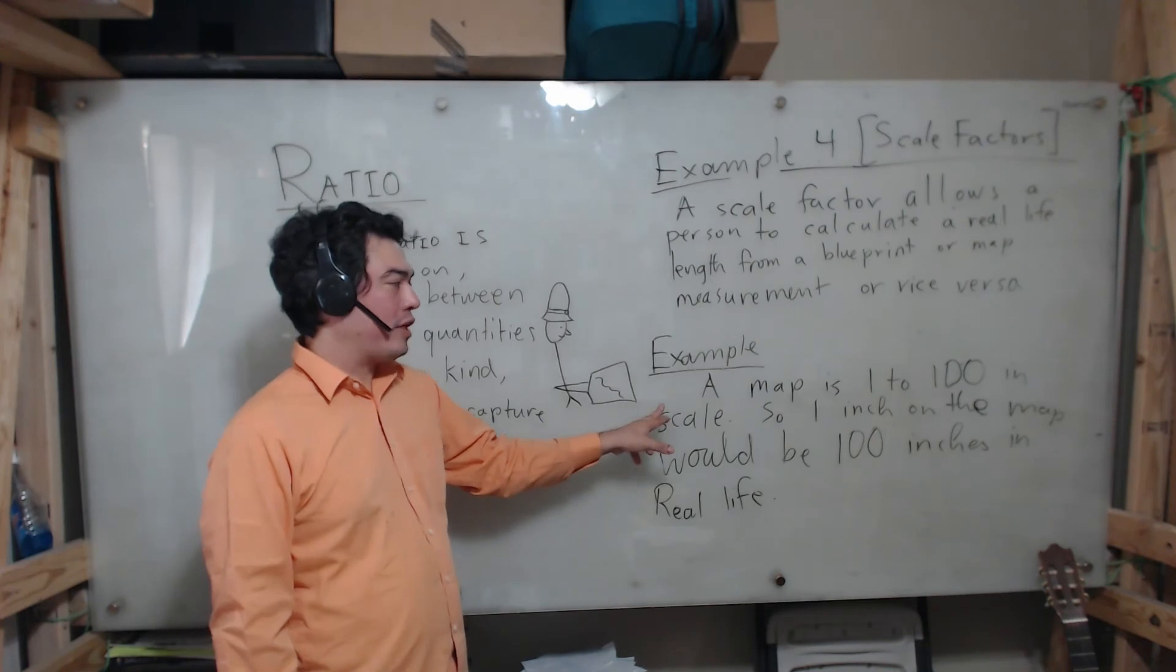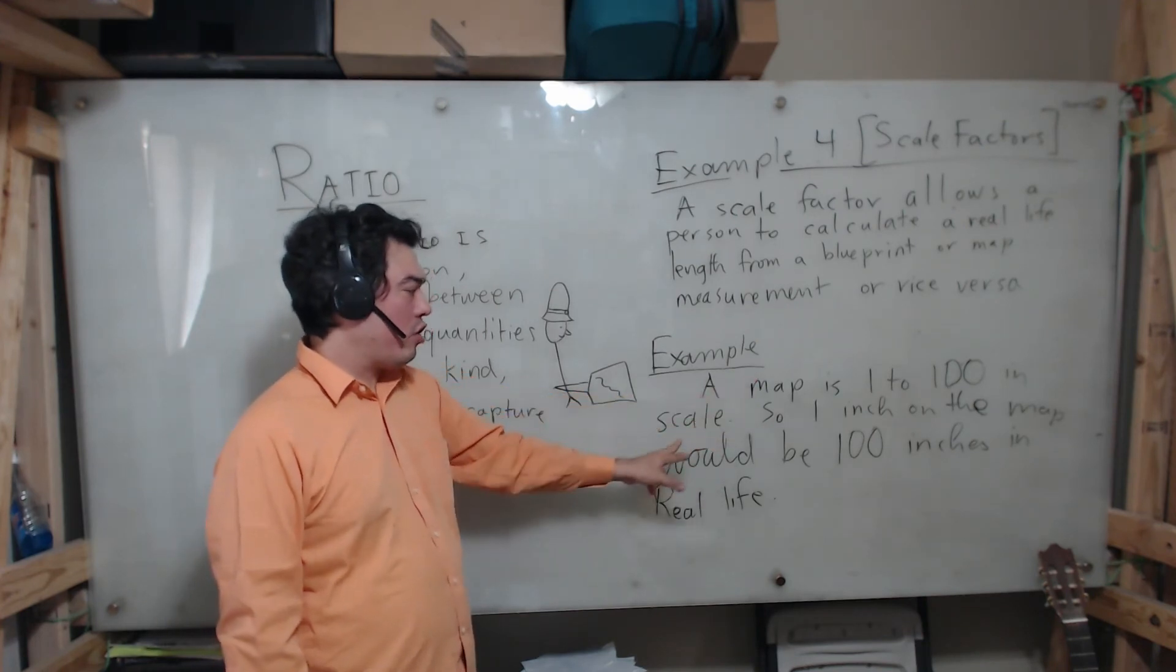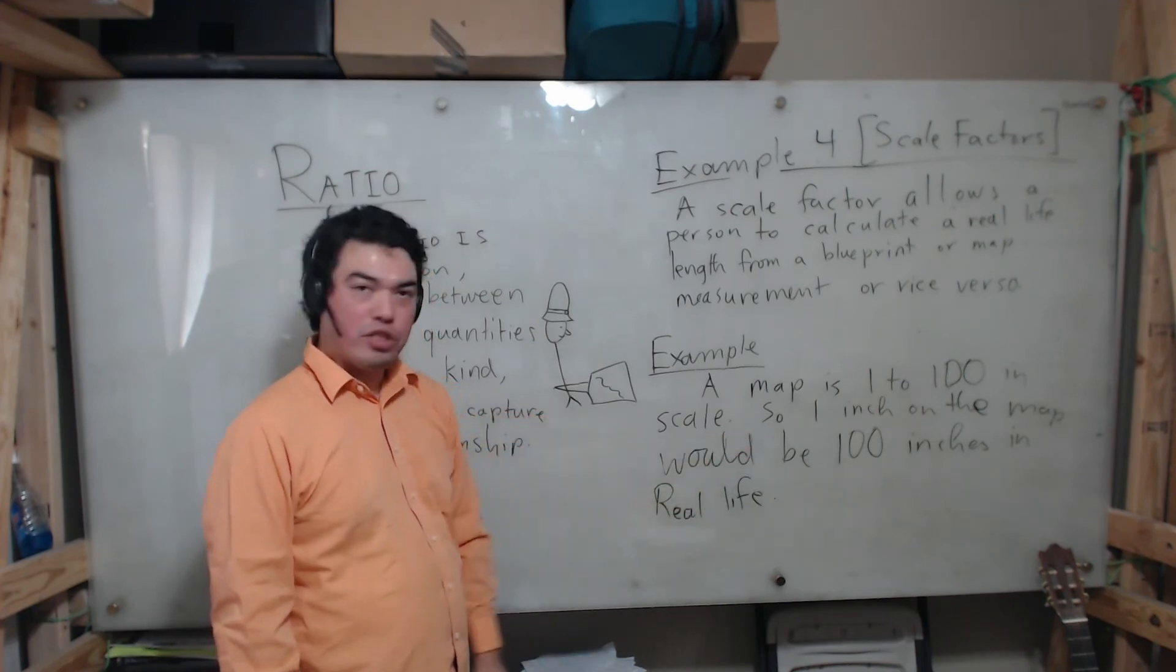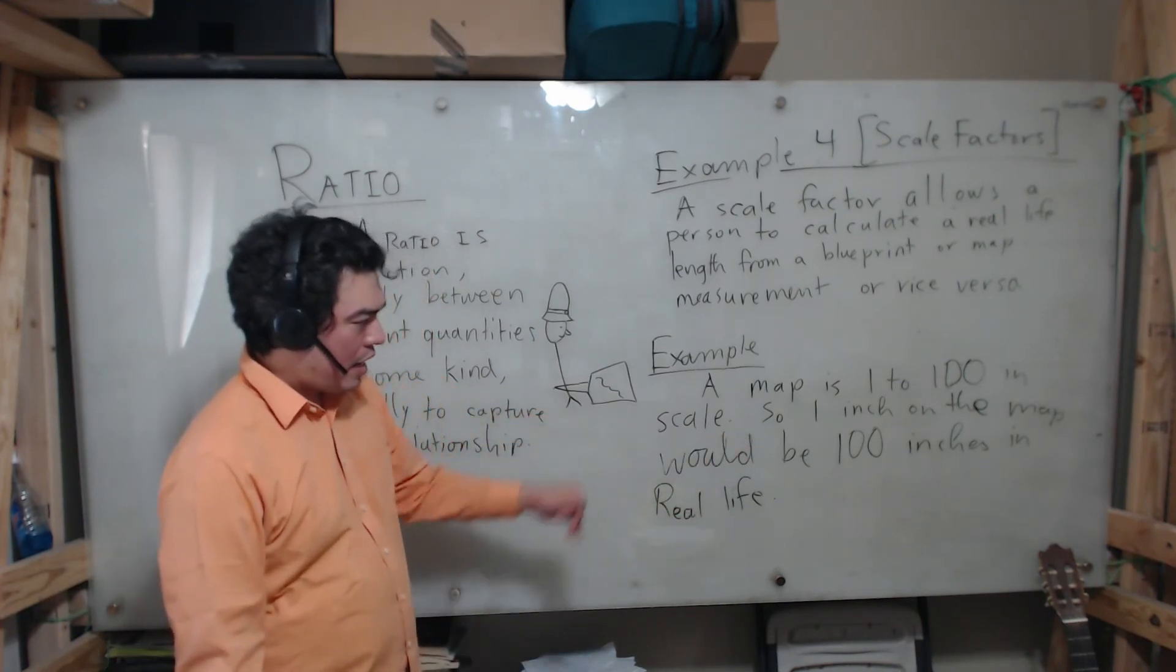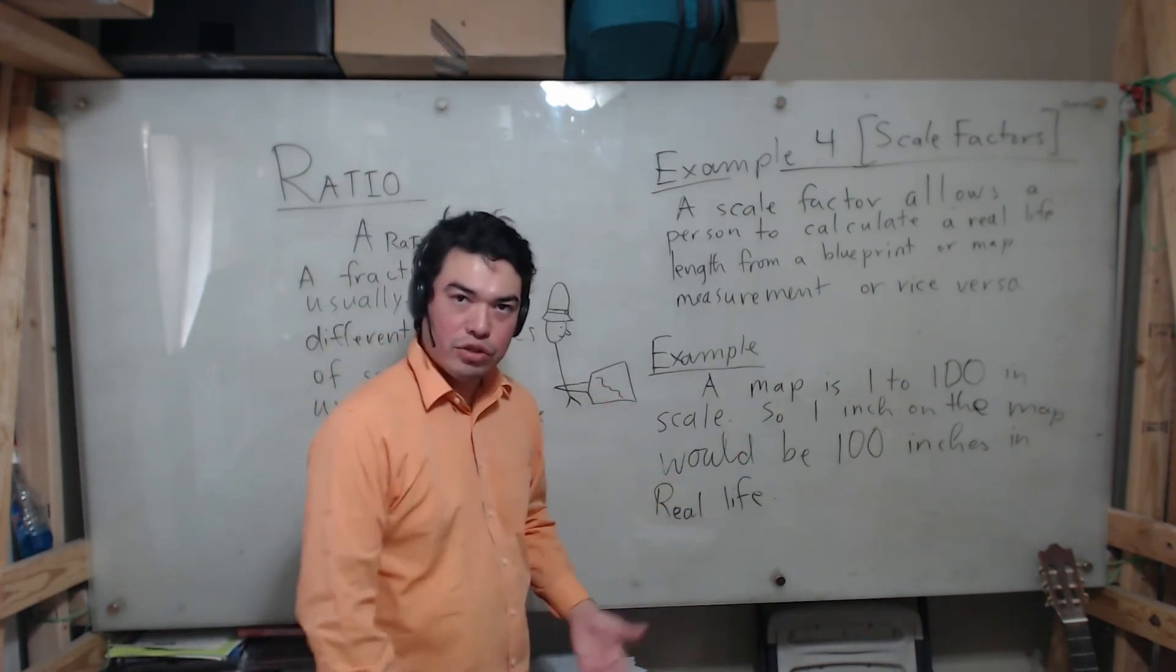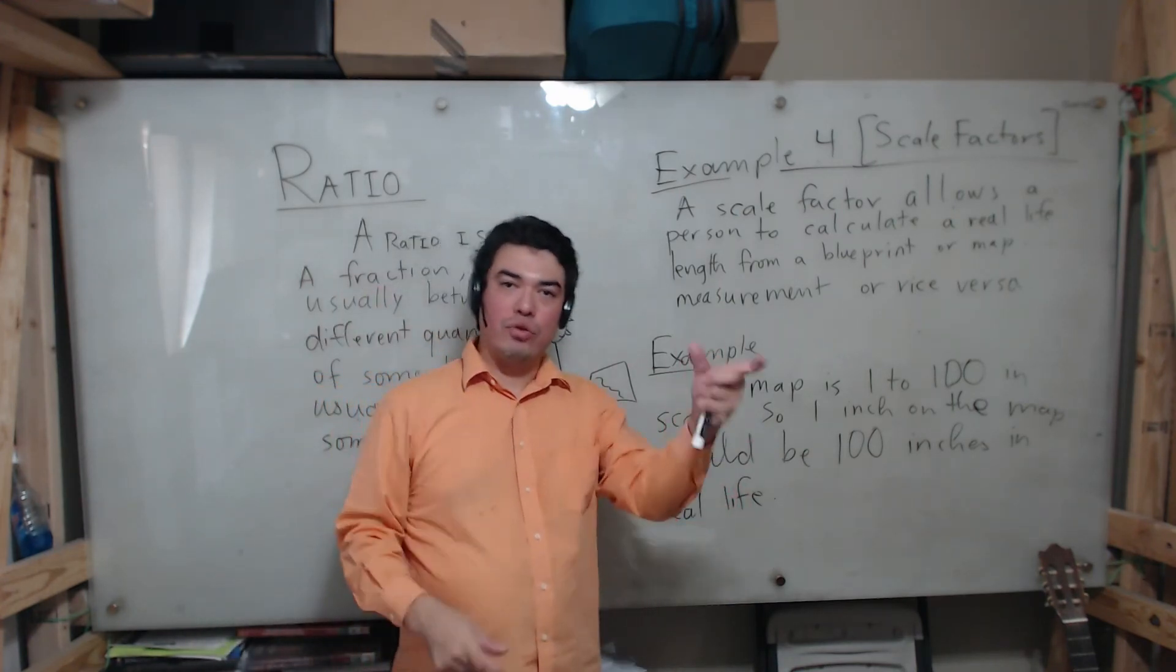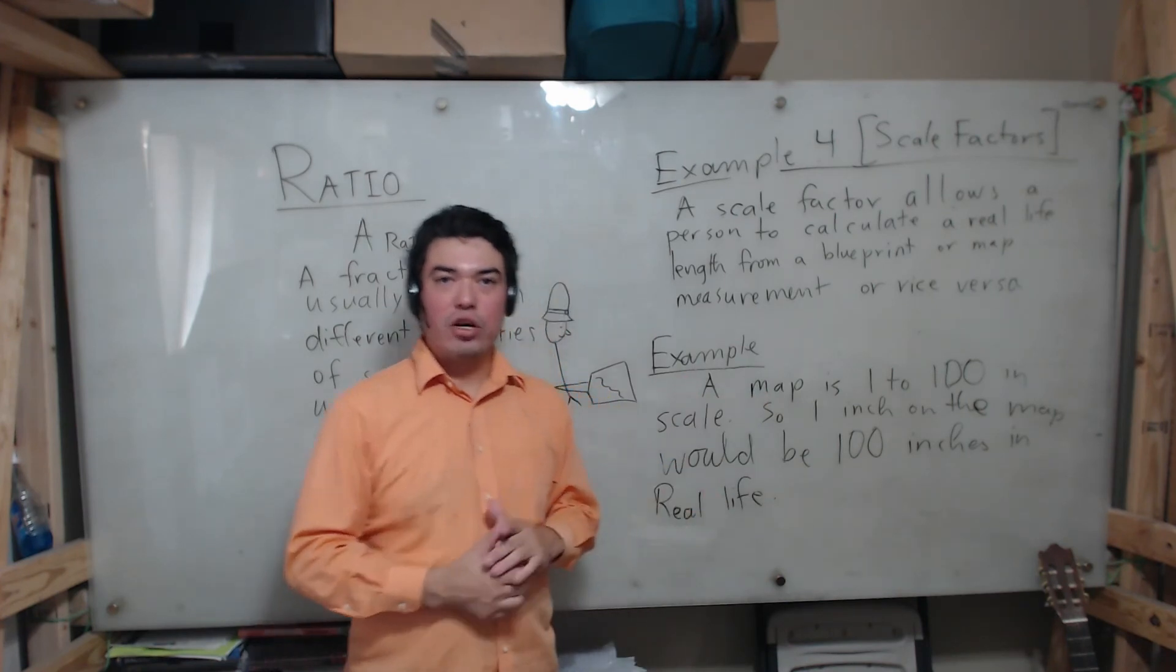Of course you could also have different scales. You could have that an inch on the map is a mile in real life, an inch is 2,000 feet, various other combinations. But in each of these cases you can see that a ratio is being used to capture the relationship between a distance on the map or blueprint and the distance in real life.